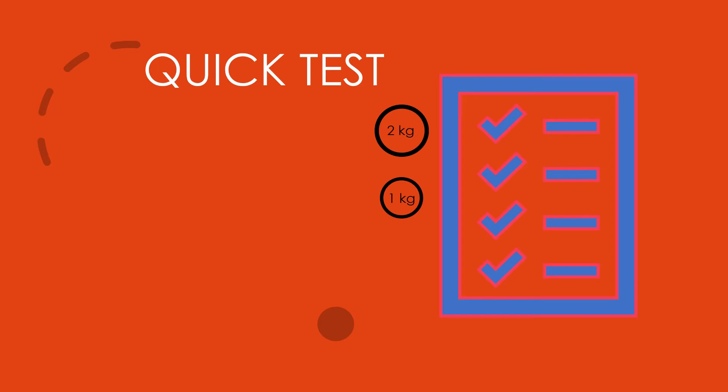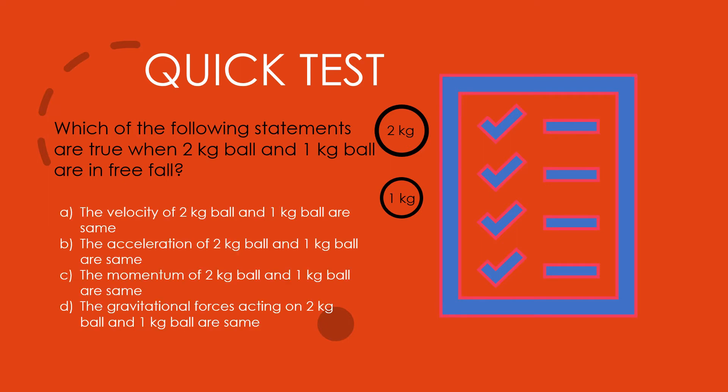Last question. This is also multiple choice question. Which of the following statements are true when 2 kg ball and 1 kg ball are in free-fall? A: The velocity of 2 kg ball and 1 kg ball are same. B: The acceleration of 2 kg ball and 1 kg ball are same. C: The momentum of 2 kg ball and 1 kg ball are same. Or D: The gravitational forces acting on 2 kg ball and 1 kg ball are same. In 10 seconds. 3, 2, 1. Time's up. The answer is B. The acceleration of 2 kg ball and 1 kg ball are same.